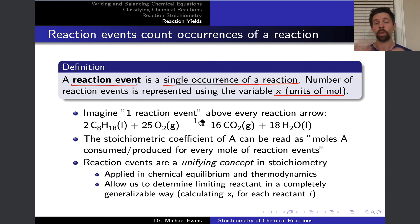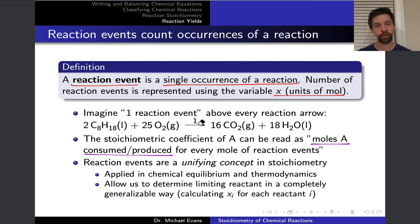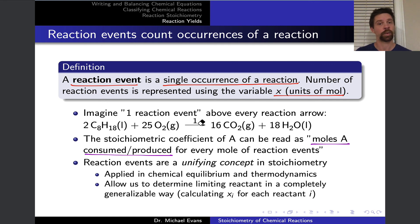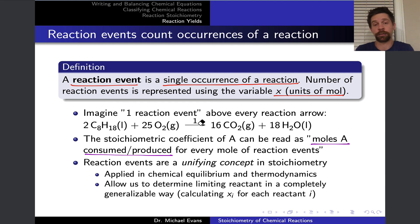The concept of reaction events reduces even unwieldy reactions with large stoichiometric coefficients to something simple on the product side. It also lets us read each stoichiometric coefficient as a ratio: moles of a reactant or product consumed or produced per mole of reaction events. This is a unifying concept in stoichiometry, and I hope to demonstrate that by showing how it can be applied to solve limiting reactant problems.